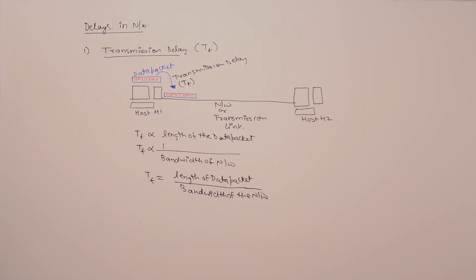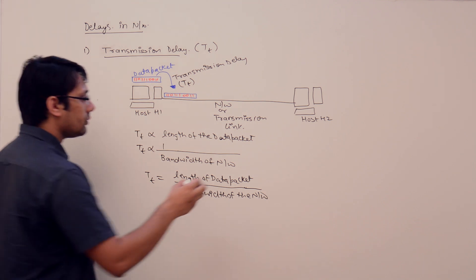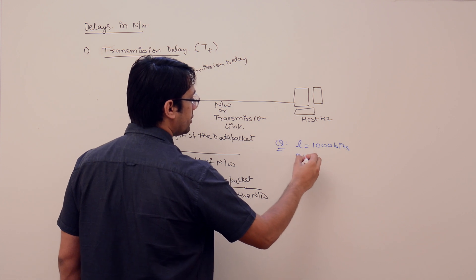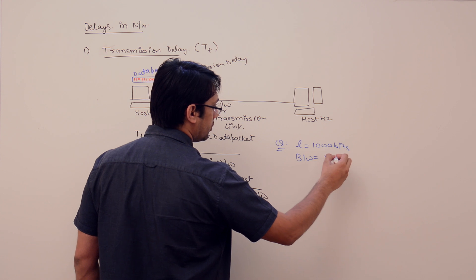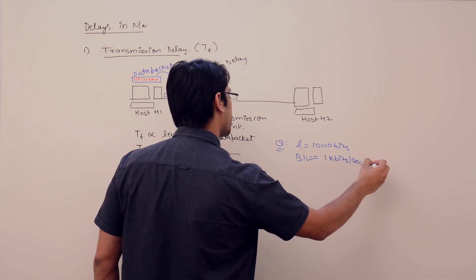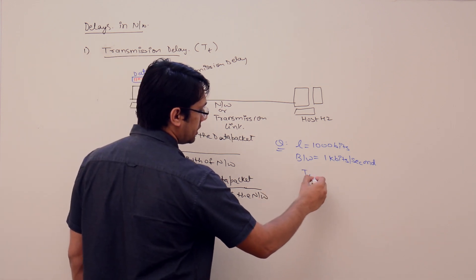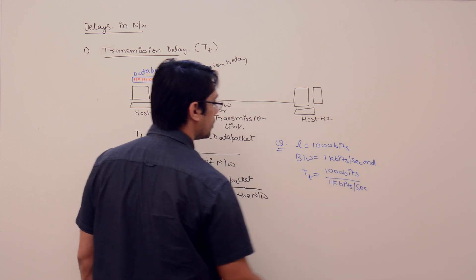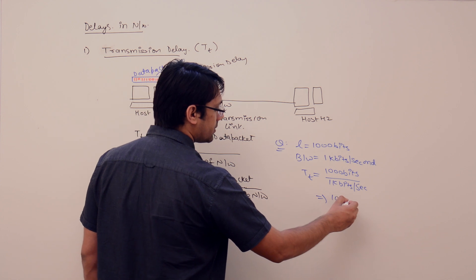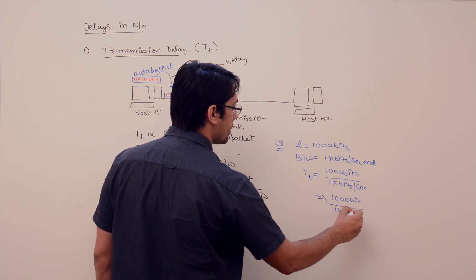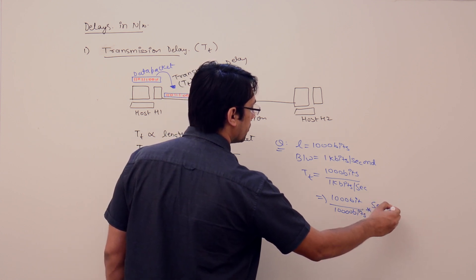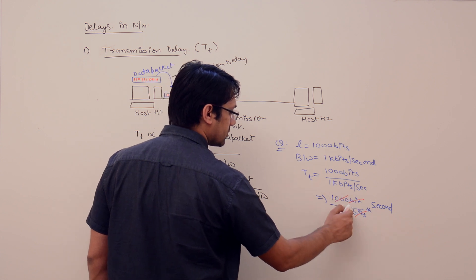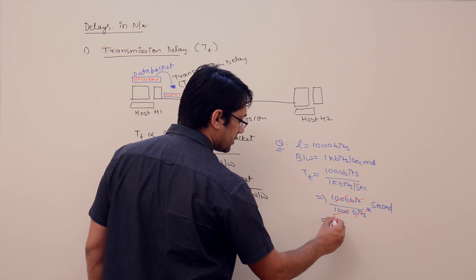Assume the length of the data packet is 1000 bits and the bandwidth of the network is 1 kilobits per second. Then transmission time is 1000 bits divided by 1 kilobits per second, which is 1000 bits divided by 1000 bits per second. Bits cancel with bits and 1000 cancels with 1000, so the transmission time in this case is 1 second.